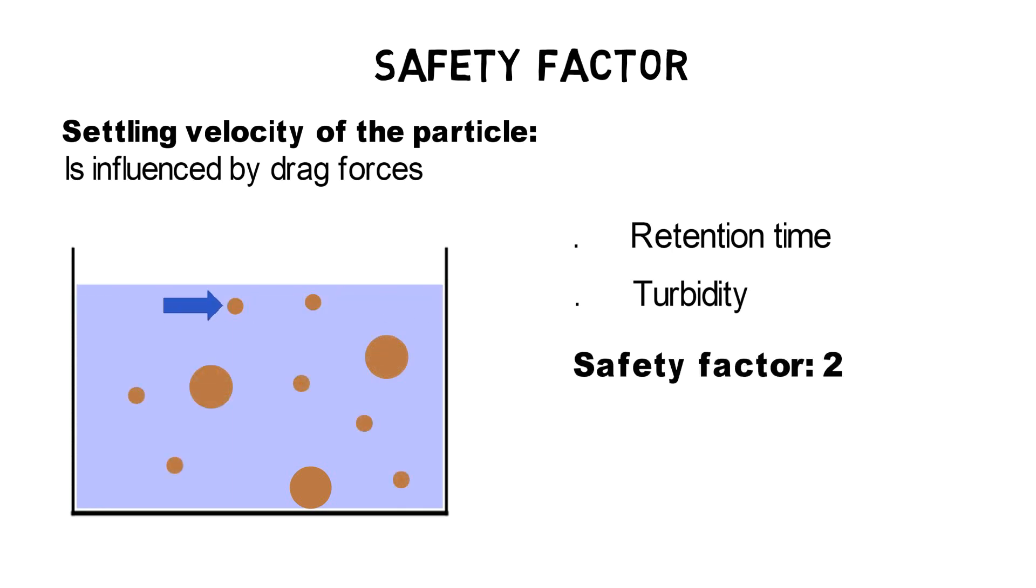Therefore, the resulting settling velocity of the particles is 1.67 meters per hour divided by 2, which equals 0.835 meters per hour or 2.75 feet per hour.